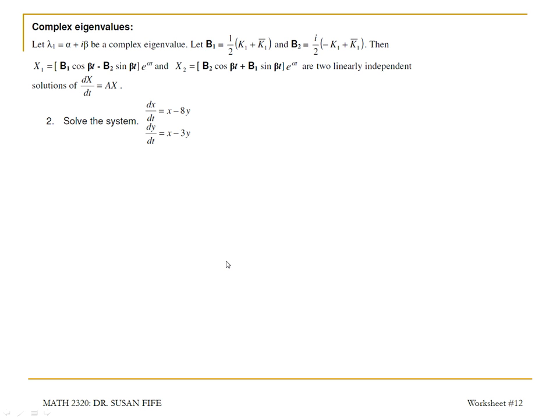Okay, and our last example is this system where we will end up with complex eigenvalues. So we're going to get eigenvalues in the form of alpha plus or minus beta i. And if we just take the positive eigenvalue, alpha plus beta i, we will be able to come up with two vectors.